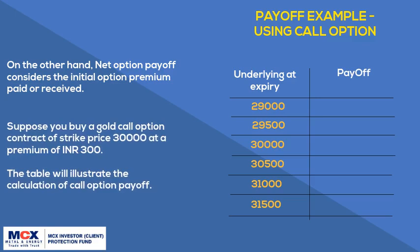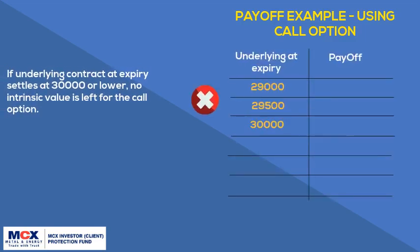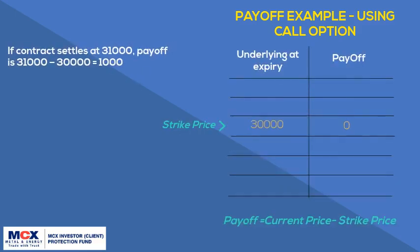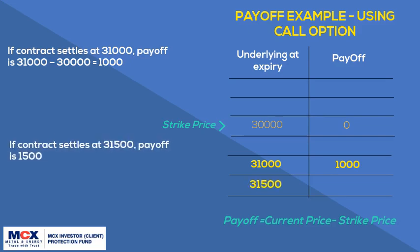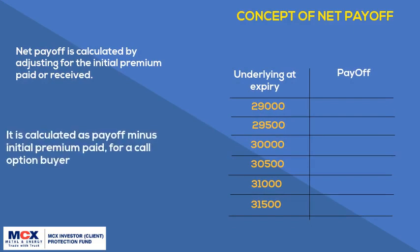Suppose you buy a gold call option of strike price 30,000 at a premium of 300 Indian rupees. The table illustrates the calculation of call option payoff. If the underlying contract at expiry settles at 30,000 or lower, no intrinsic value is left for the call option. If the underlying contract settles above 30,000, the payoff for the call option is calculated as the difference between the contract price and the strike price. For example, if the contract settles at 31,000, payoff is 31,000 minus 30,000, which is 1,000. If the contract settles at 31,500, payoff is 1,500. Net payoff is calculated by adjusting for the initial premium paid — it is payoff minus initial premium paid for a call option buyer.